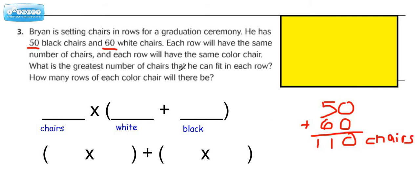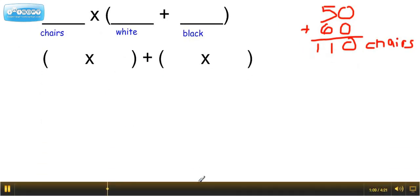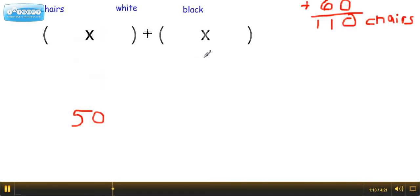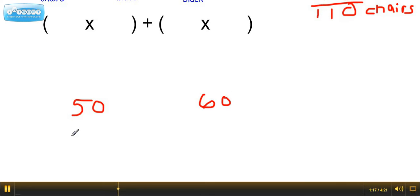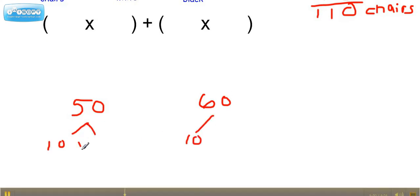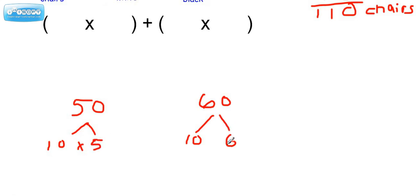Now what we need to find is the GCF of 50 and 60. To refresh your memory on how to do that, we know that 10 goes into both because they end with 0. The other factor here would be a 5. The other factor here would be a 6.